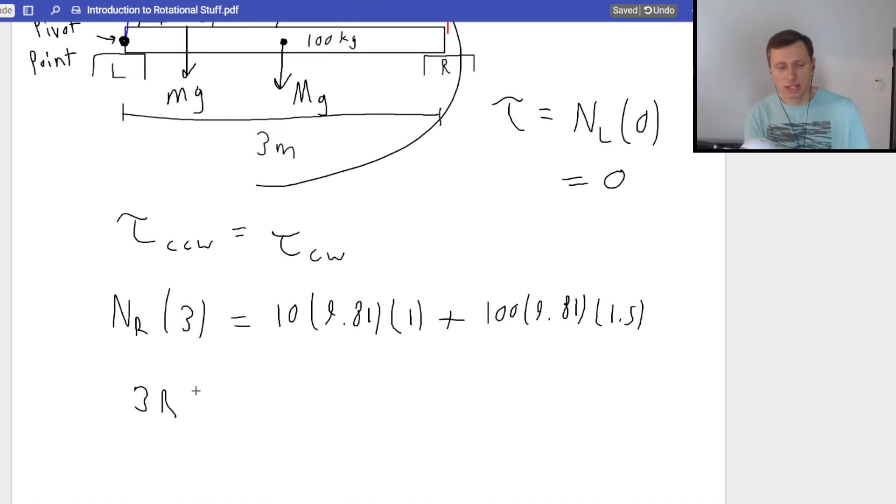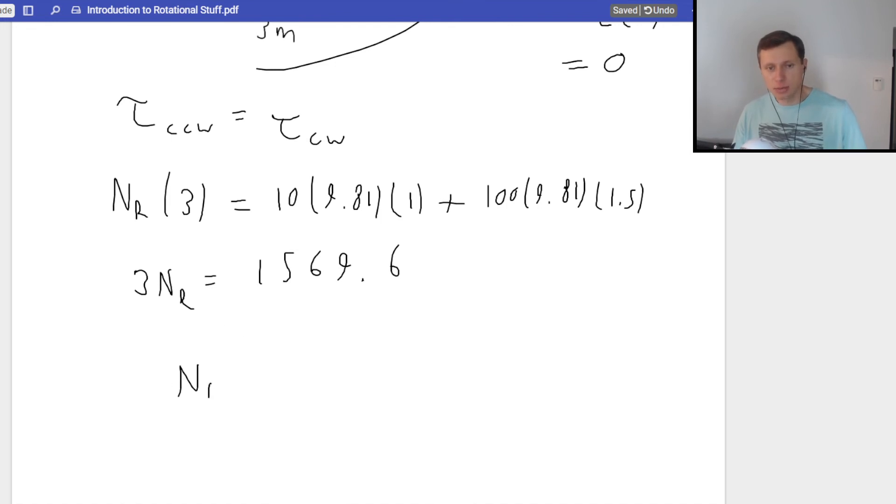The only thing we don't know is NR. Let's go ahead and do some algebra and solve here. So on the left side, 3N sub r. On the right side, I just need to plug this in my calculator. 10 times 9.81 times 1 plus 100 times 9.81 times 1.5. We're going to get a final answer of, well not final answer, 1,569.6. Then divide that by 3 to find the normal force on the right side. Divide it by 3. We're going to get 523.2 Newtons. There we go. We found the normal force on the right side. That's half the battle.